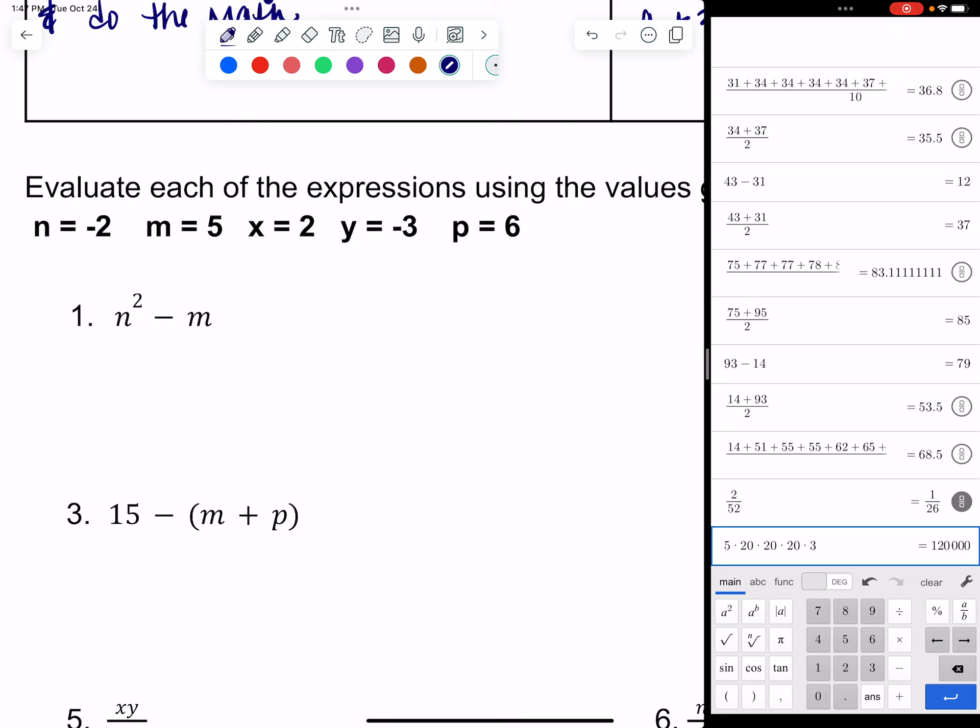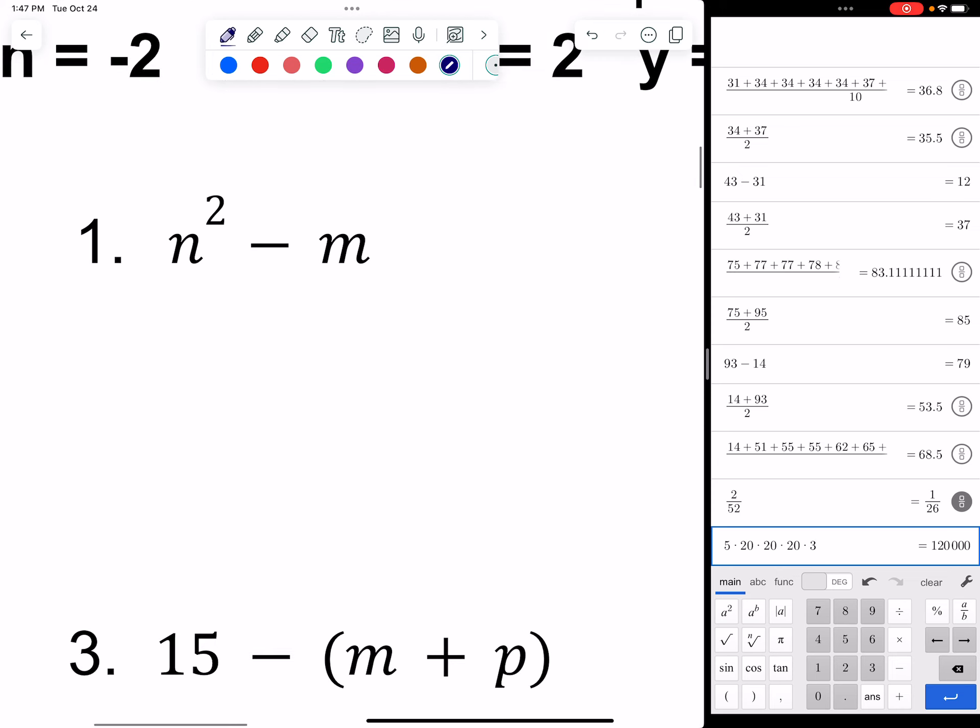Number one says, N squared minus M. Now, before we jump in and just start plugging in numbers willy-nilly, I want to caution you about these squares. If you do not use the right mathematical notation when you're plugging these numbers in, especially when it comes to exponents, life is not going to be good. So, your Desmos Calculator is only as smart as its user. So, one of the things I like to do when I'm setting up these evaluate problems is I like to use bajillions of parentheses.